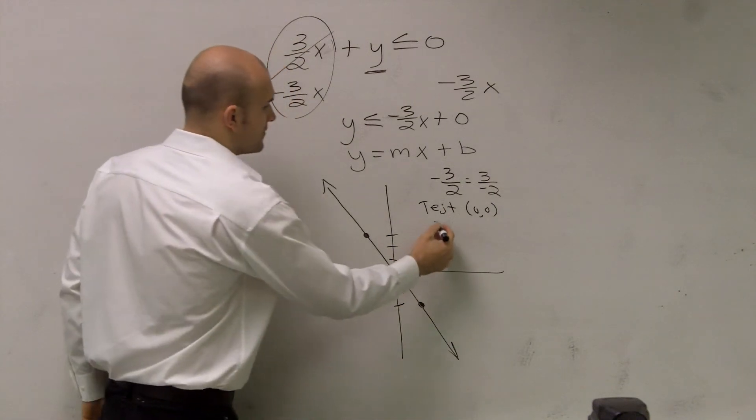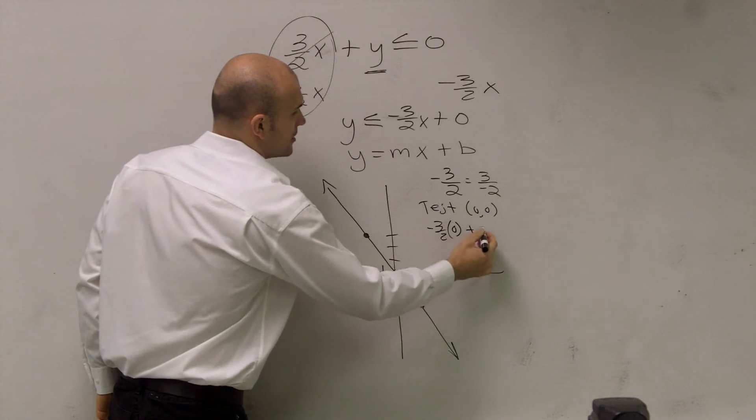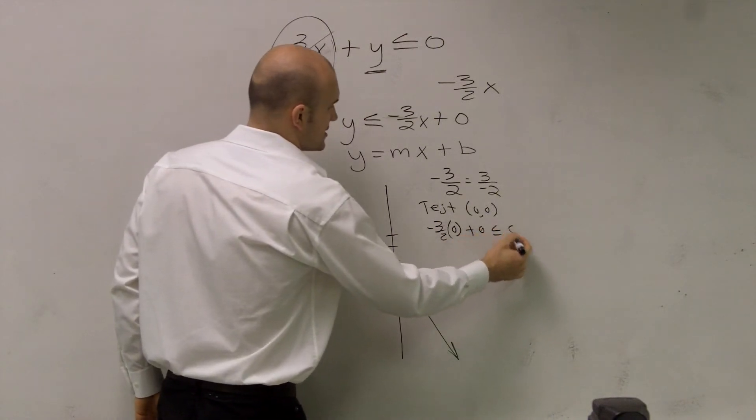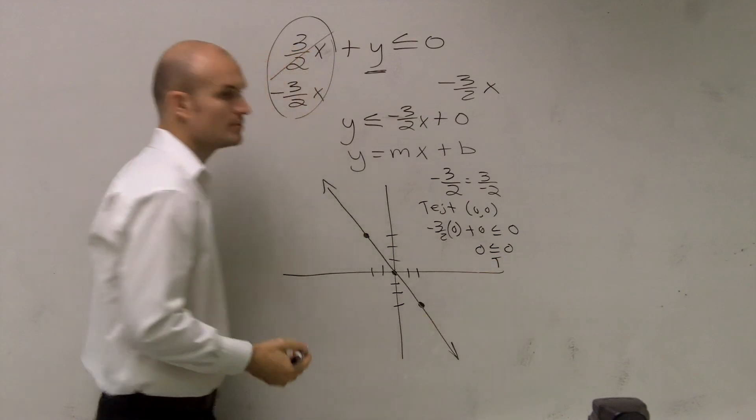I'll plug in negative 3 halves times 0 plus 0 less than or equal to 0. Well, I get 0 is less than or equal to 0, which is true.